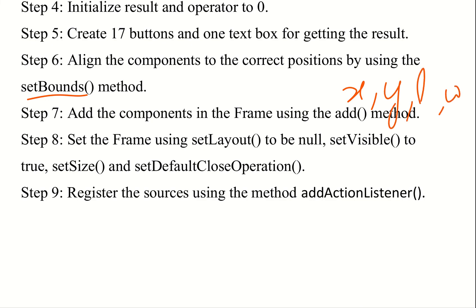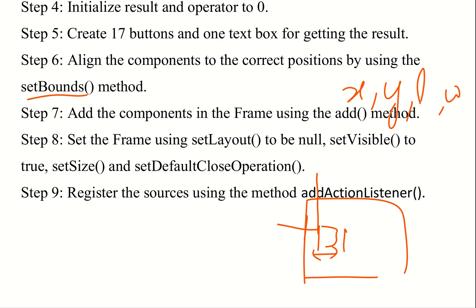Using setBounds, we specify the length and width for each component. For each button in the frame, we specify which position it goes, the length and width. We apply the same type of setBounds method to all buttons and components.